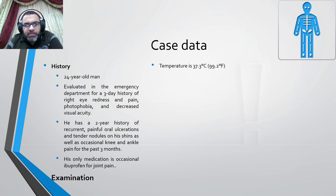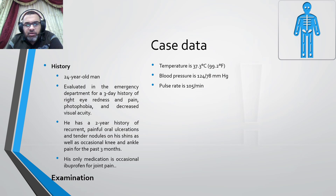On examination: temperature slightly elevated at 37.3°C, blood pressure within normal at 114/78, pulse rate tachycardic at 105 beats per minute, respiratory rate normal at 18 per minute, and BMI is 26. On ophthalmological examination, there is a ciliary flush around the right limbus and a constricted pupil.